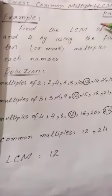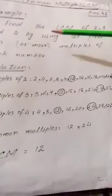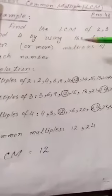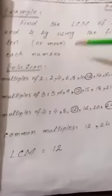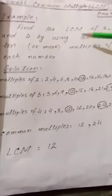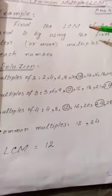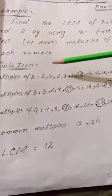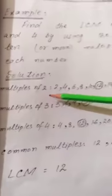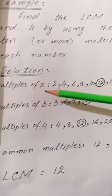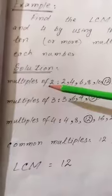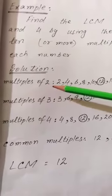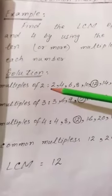For example, find the LCM of 2, 3, and 4 by using the first 10 or more multiples of each number. Now we need to find the LCM. We find the multiples of 2. We get the series of multiples by multiplying the given number by other numbers.